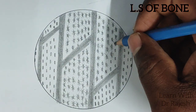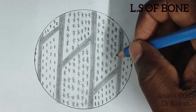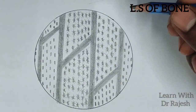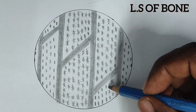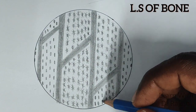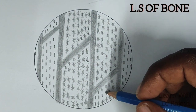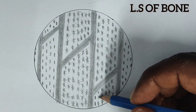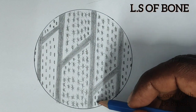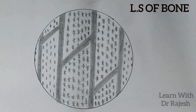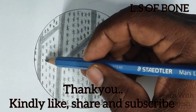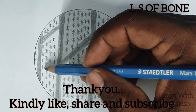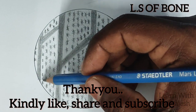This marks the end of the histology of compact bone. In our next video, let us study about cartilage. Watch our previous video for the histology series — links for the previous videos are given in the description. Thank you.